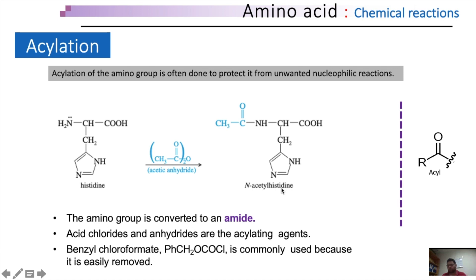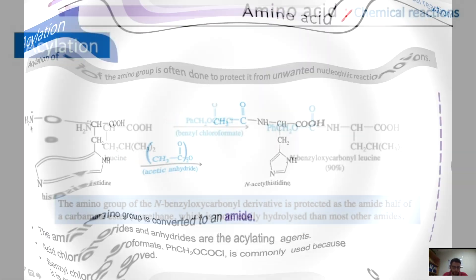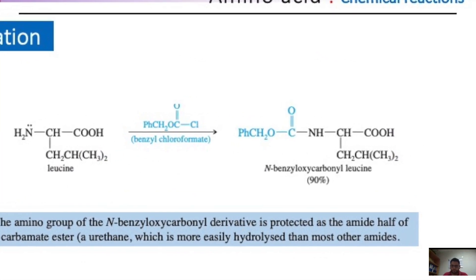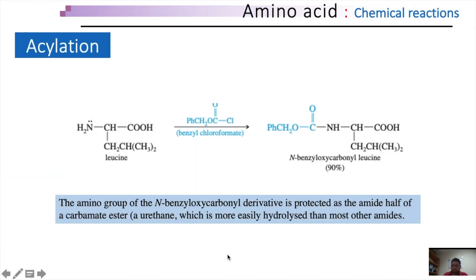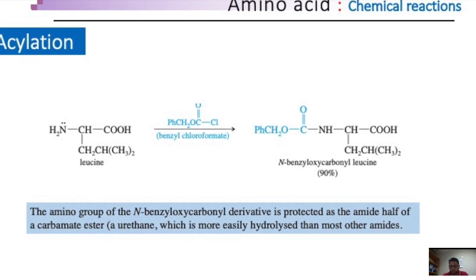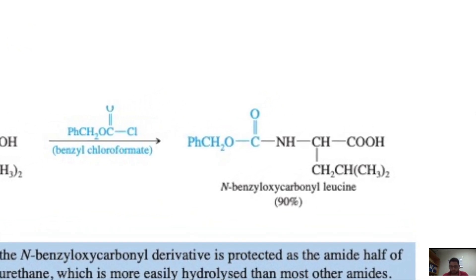In peptide synthesis, benzyl chloroformate is usually used for acylation to protect the amino group. This results in derivatives known as benzyloxycarbonyl. The reaction of leucine acylation is shown using benzyl chloroformate as the acylating agent, resulting in the formation of N-benzyloxycarbonyl leucine. The amino terminal of this derivative is now protected. The amide half of this carbamate ester or urethane is more easily hydrolyzed than most other amides.